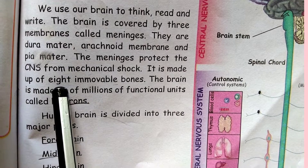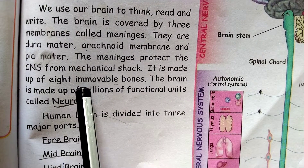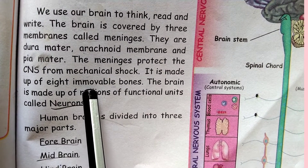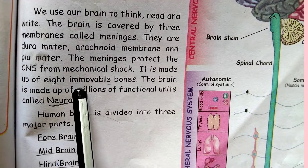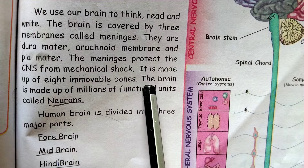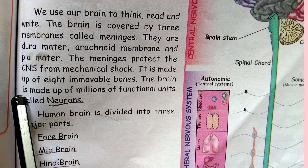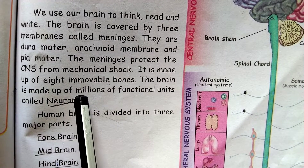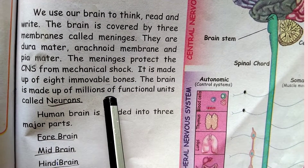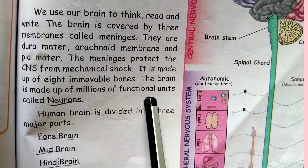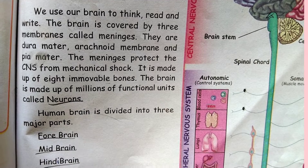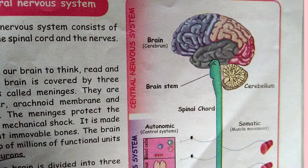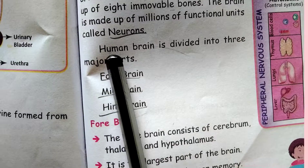The skull is made up of eight immovable bones. The brain is made up of millions of functional units called neurons.